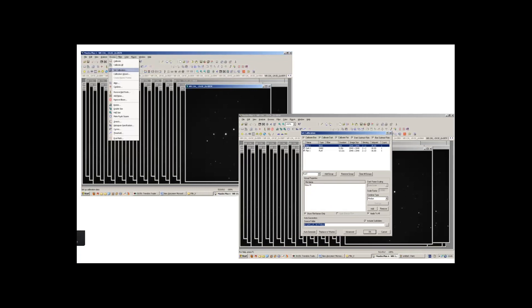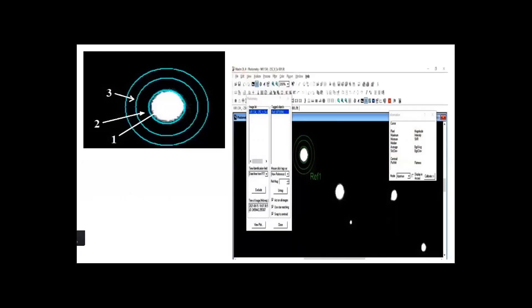For calibration of materials, we use the MaxIm DL program package. Here you see the main working windows. First we open all images of the star, then dark, bias, and flat images. We obtain super bias, super dark, and super flat files to calibrate the main image of our object.